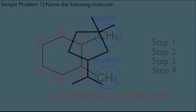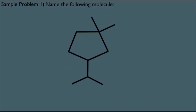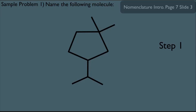Let's look at a sample problem — name this following molecule. Starting with step one, we notice there is a ring in the molecule, so we find the biggest ring. That is this central part, and you should count five carbons within that red box, making the parent name cyclopentane.